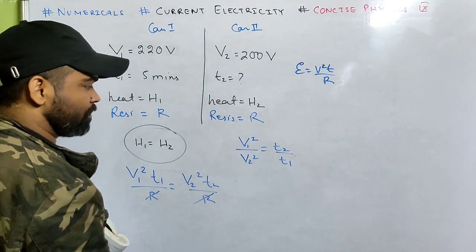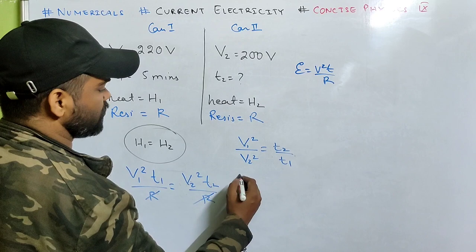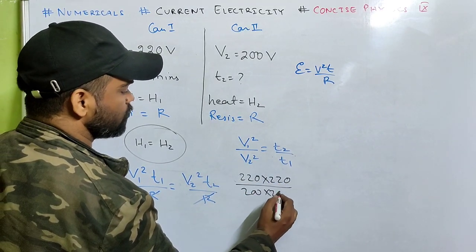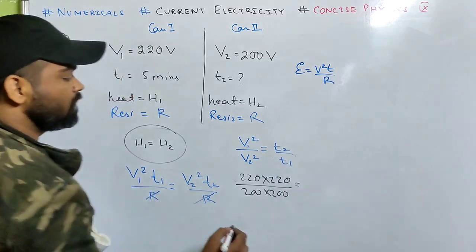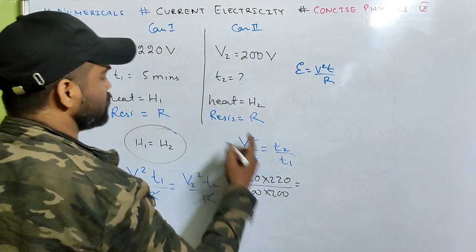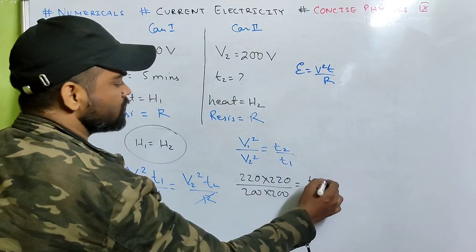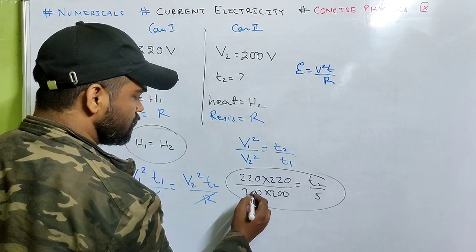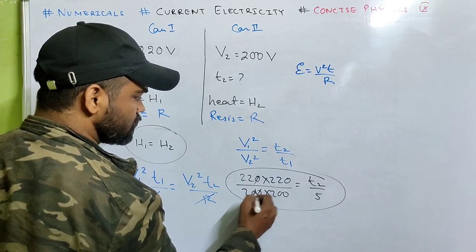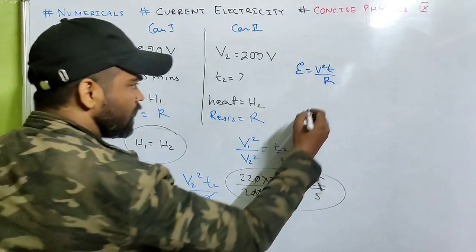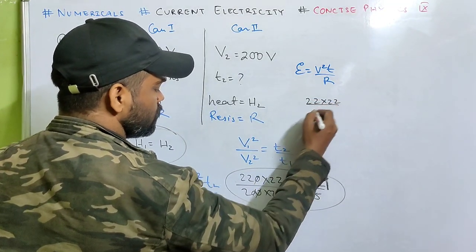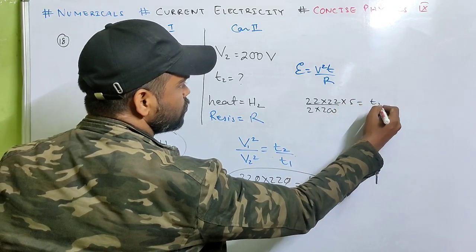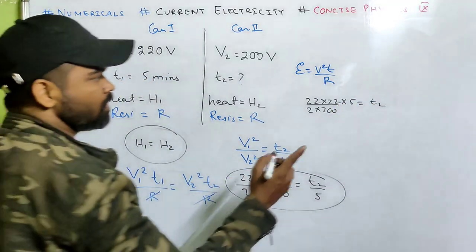Just substitute the values: V1 squared, that's 220 into 220, V2 squared is 200 into 200, T1 is 5, and we need to find T2. So 22 into 22 by 2 into 200 into 5 equals T2.